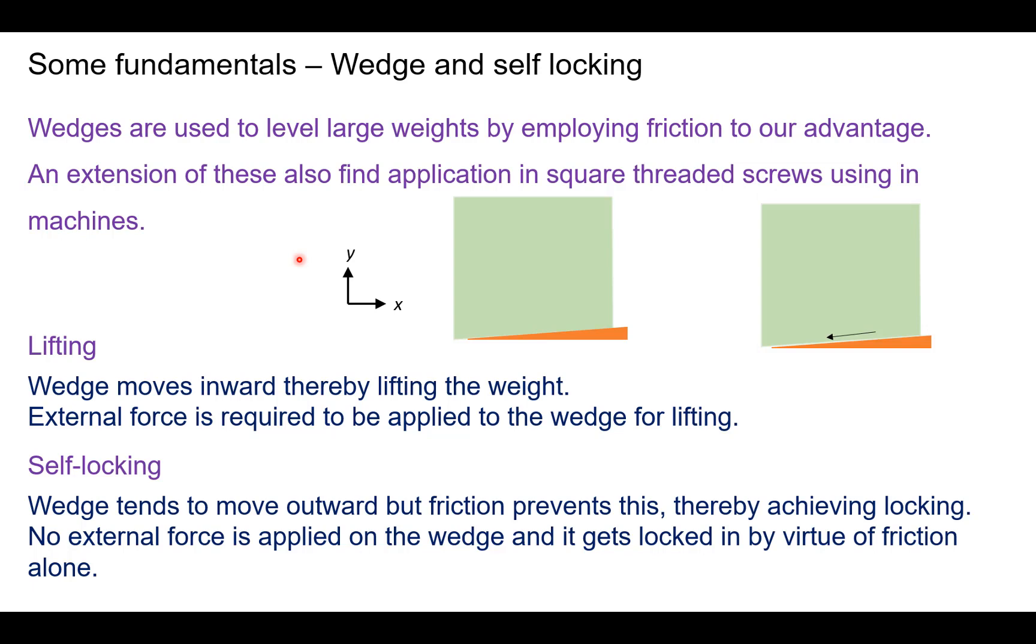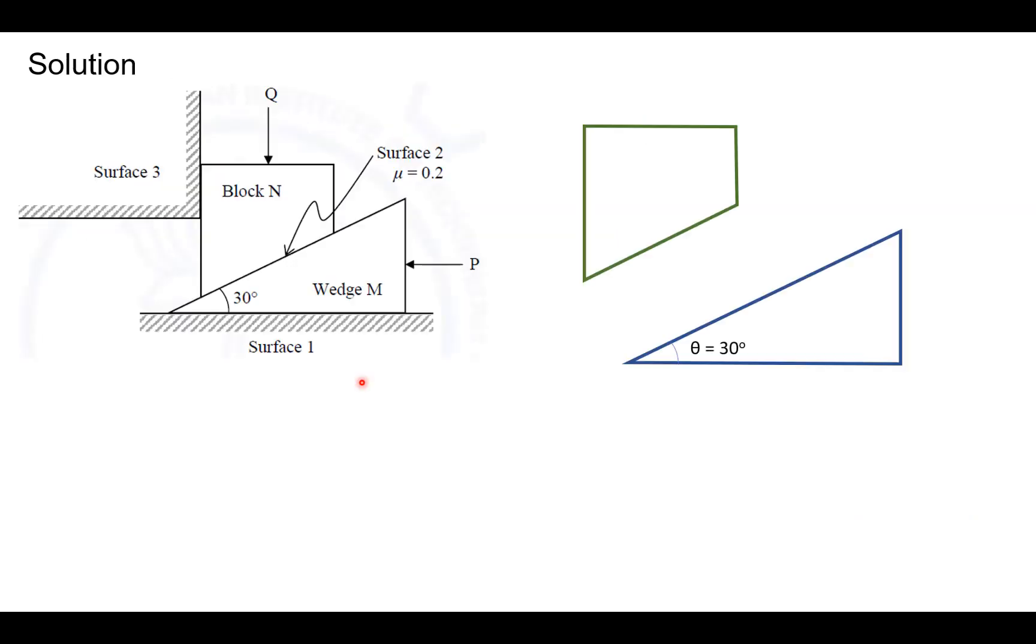With this background, let us try to solve the problem at hand. If we were to draw the free body diagram of the block N and wedge M, we can see that the angle of the wedge is given to be 30 degrees. And let this wedge and block assembly be present in the xy axis. We can see that P and Q are applied as shown.